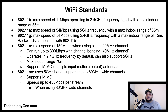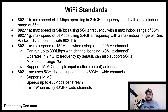The 802.11g has a maximum speed of 54 megabits per second operating in the 2.4 GHz frequency band with a maximum indoor range of 45 meters, and it is also backwards compatible with the 802.11b network. The 802.11n has a max speed of 150 megabits per second when using a single 20 MHz channel.